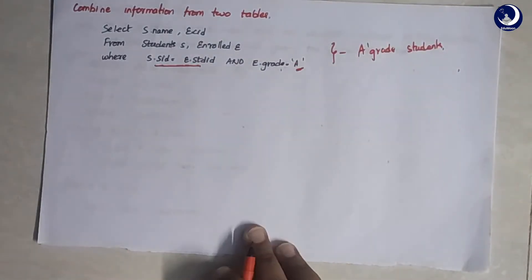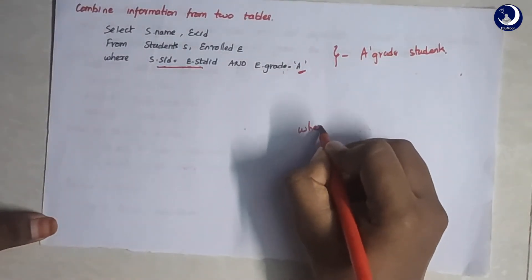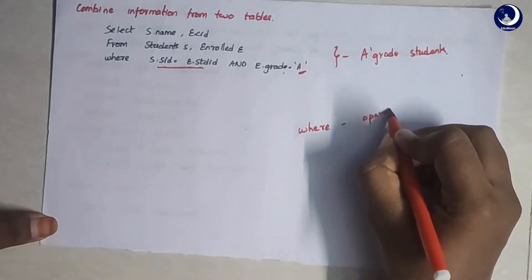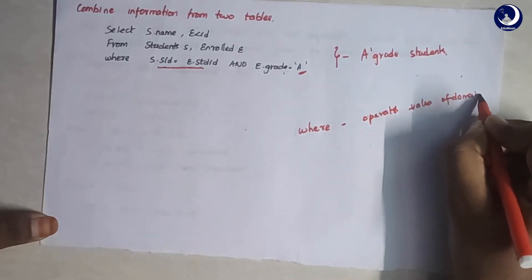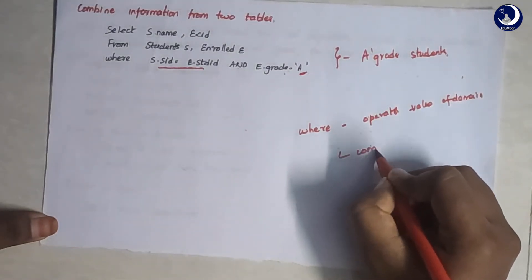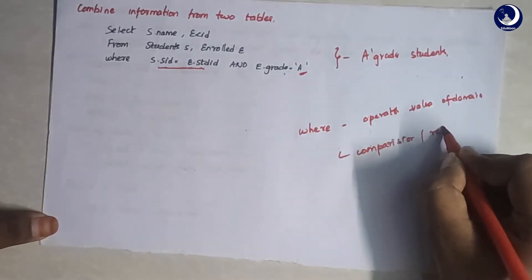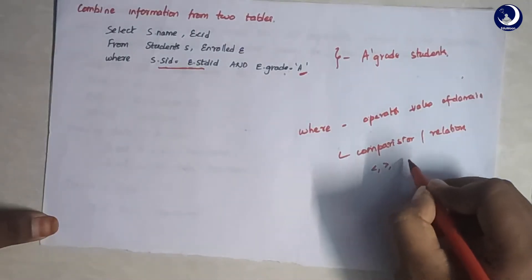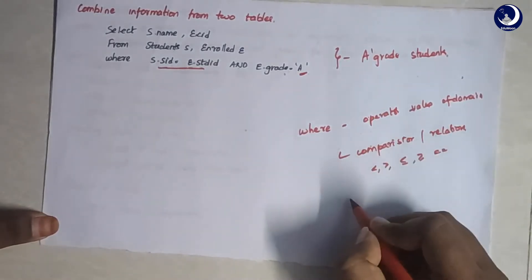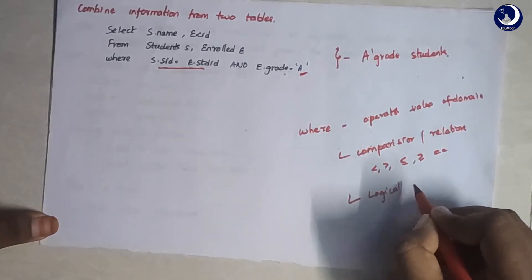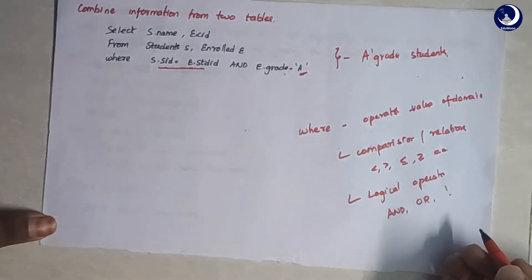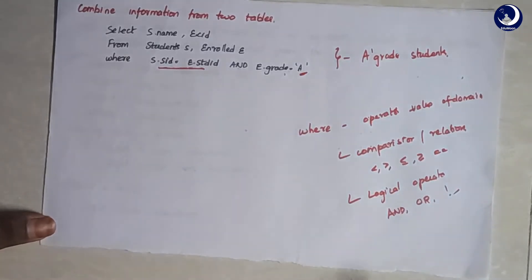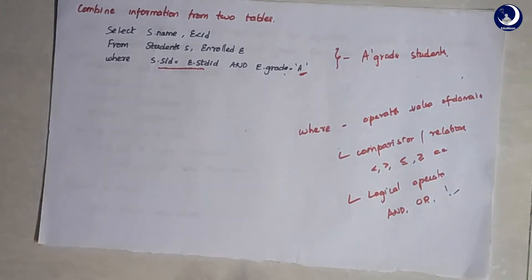In the WHERE clause we use operators for comparing values of the domain. There are two different types of operators. First, comparison or relational operators — which are less than, greater than, less than or equal to, greater than or equal to, and equal to. Second, logical operators — AND, OR, and NOT. These are the operators we use in a WHERE clause generally to filter the data.